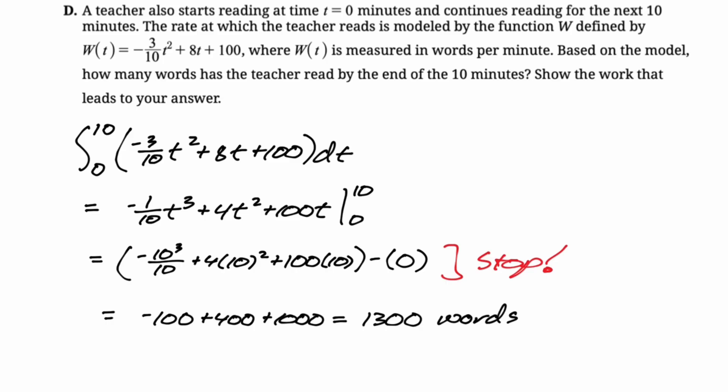But I can't help myself. So I simplified anyway. So you get negative 100 plus 400 plus 1000, 1300 words is what you get. So that's the entirety of this question. I hope this was helpful and good luck.